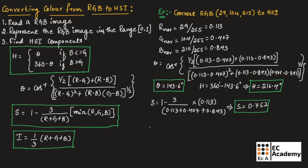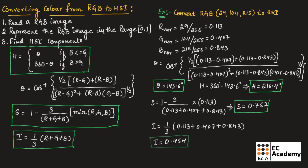Now let us find the value of intensity using the formula. Substituting R, G, and B: I equals 1/3 times (0.113 plus 0.407 plus 0.843). Simplifying this gives I equal to 0.454. So this is how we can find the HSI values from RGB. Hope you have understood the topic. Thank you.